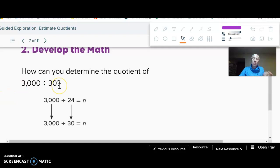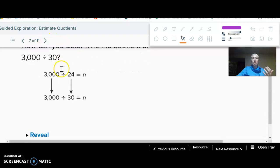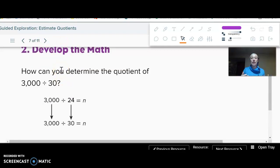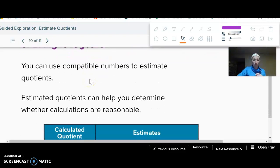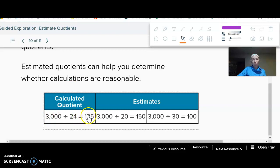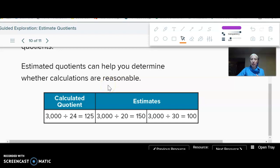Now this, because it's rounding or estimating, there's not always like this is the correct way to do it. So just know there is some flexibility in what you choose, because it's all just to help you figure out what it's going to be close to. So notice the calculated quotient is 125. My estimates were 150 and 100. So it's right in that same range. Just like with multiplication, our estimates aren't always one or two numbers off. It's okay that it's a little farther away.